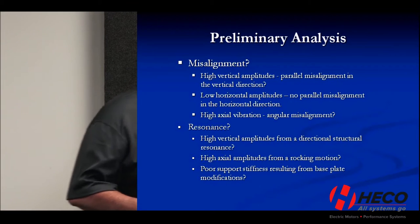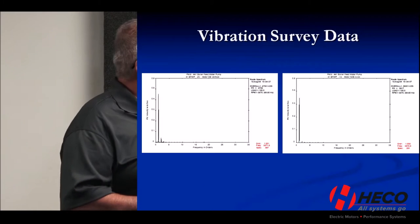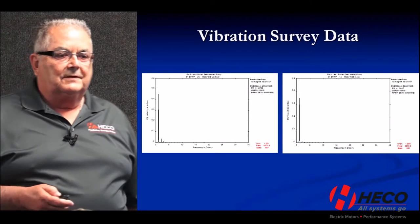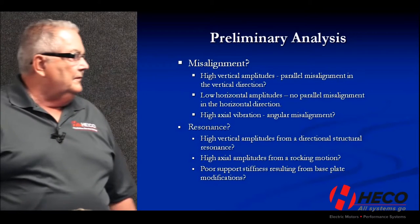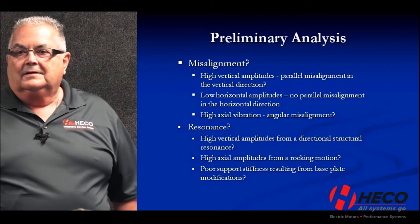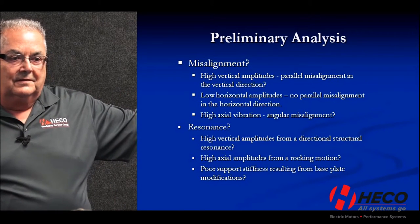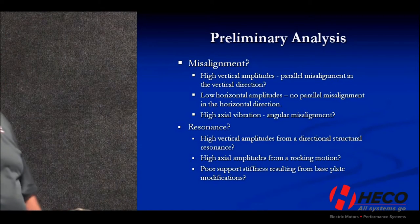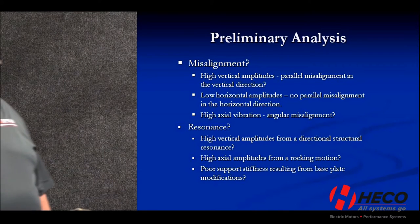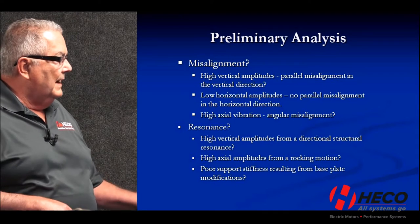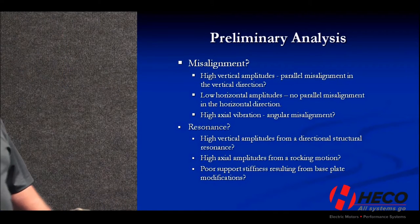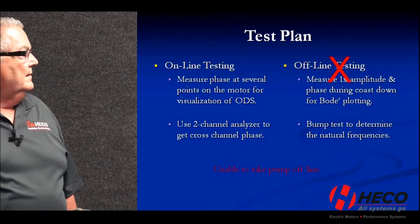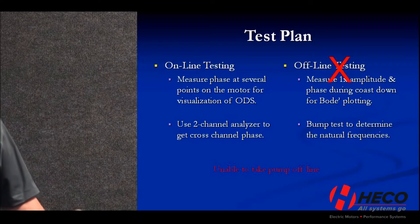There's a large difference between the vertical and the horizontal, and the axial is high also, but the vertical is much, much higher. So might this be a resonance situation? We noted that changes had been made to the structure, and also the motor is different — it could have a different mass than the previous motor. So we were pointing to this possibly being a resonance situation resulting from poor support stiffness in the base plate.